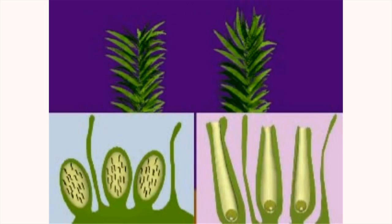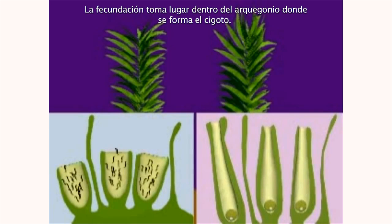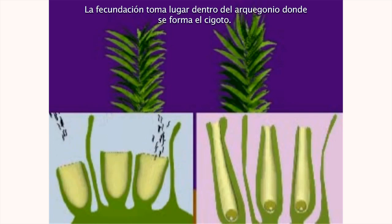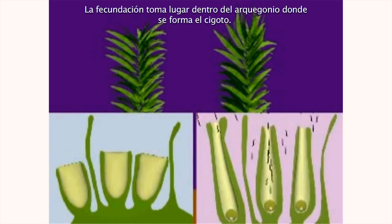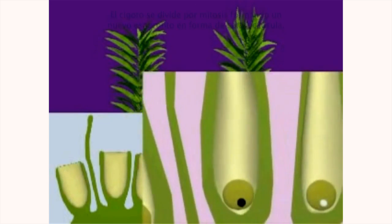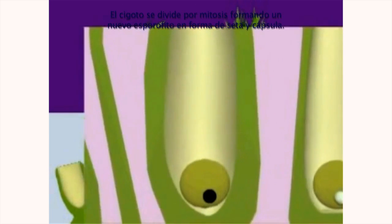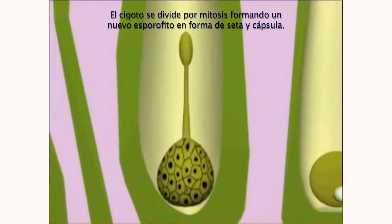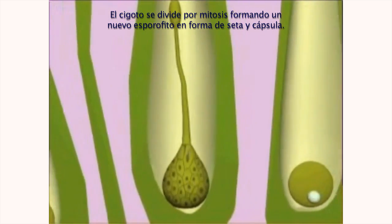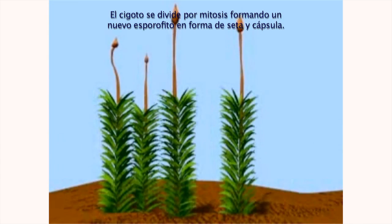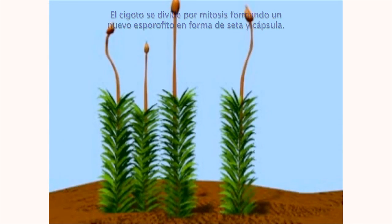Sperm are released from the antheridium and swim to the archegonium. Fertilization takes place inside the archegonium and a zygote is formed. The zygote divides by mitosis to form a new sporophyte in the form of a stalk and capsule.